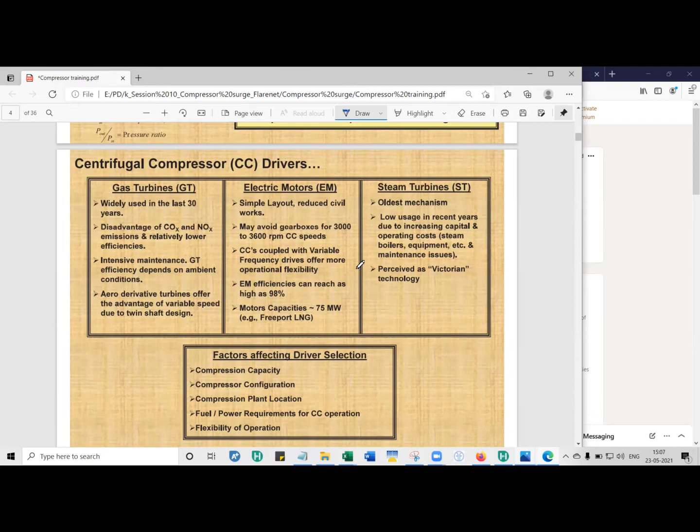Aero derivative turbines are smaller. They fit snugly into a platform. On a platform you have space constraints. If you try to increase the footprint, naturally the structure weight will increase. More cement, more metal. You need something which is smaller and still packs a punch, giving you the power rating that you need. So aero derivative turbines can be used in offshore facilities.